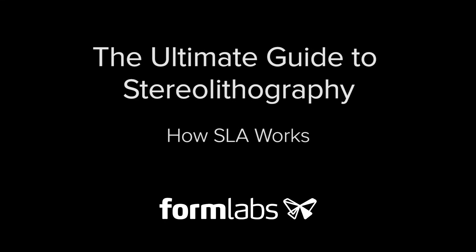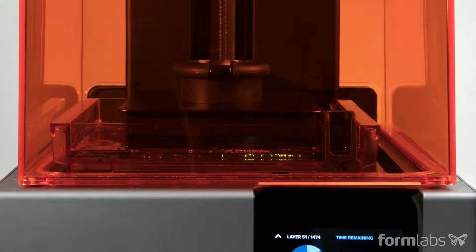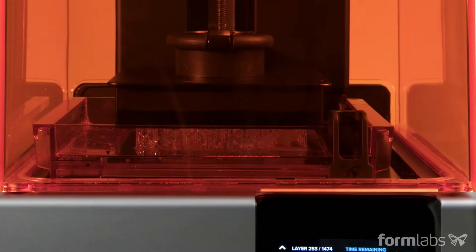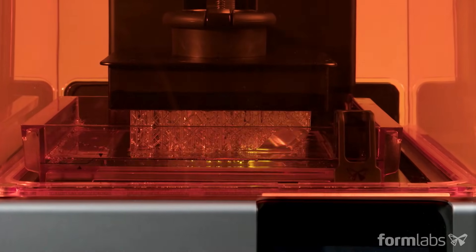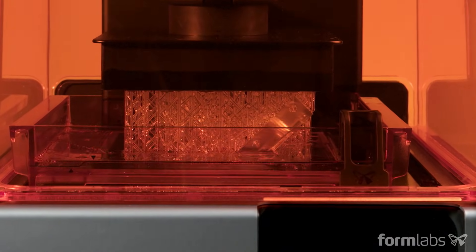All 3D printing technologies create solid parts from 3D models layer by layer. Among them is SLA. SLA stands for stereolithography, a 3D printing process that uses a UV laser to cure liquid resin into hardened plastic.